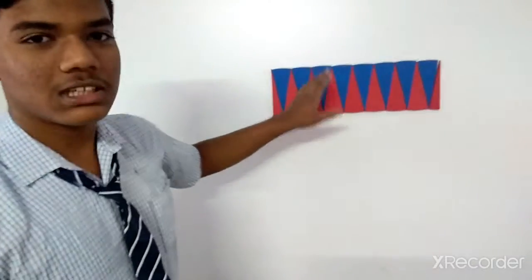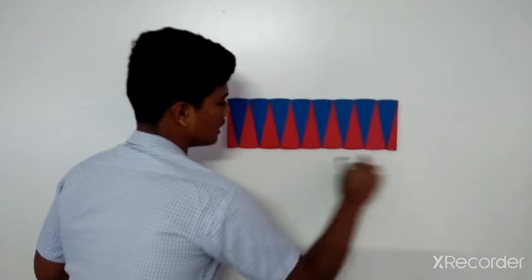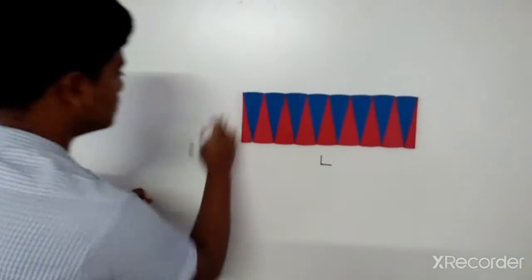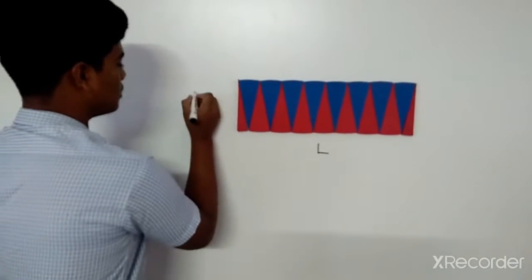Now, this figure is like a rectangle. This is the length of the rectangle L, this is the breadth of the rectangle B.